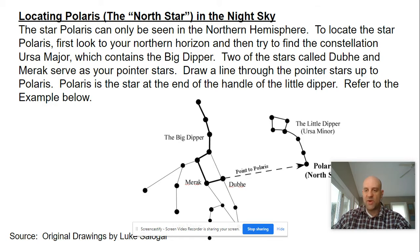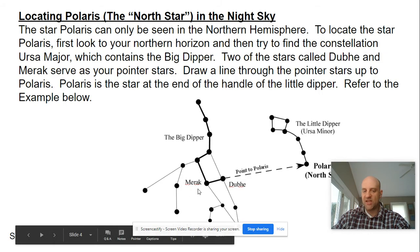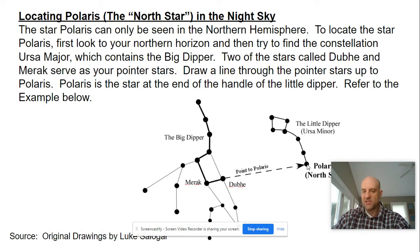One thing we need to know right away is that the star Polaris is only visible in the Northern Hemisphere. To locate the star Polaris, we're going to first try to find the constellation the Big Dipper. The reason why we start with the Big Dipper is because it has seven very bright stars in the night sky that are easy to locate. The end two stars in the Big Dipper are referred to as the Pointer Stars. If you draw a line through the Pointer Stars, that will connect to Polaris, which is the end handle of the Little Dipper.